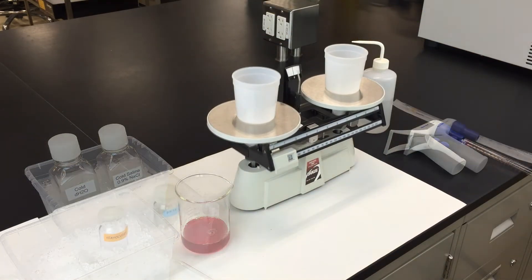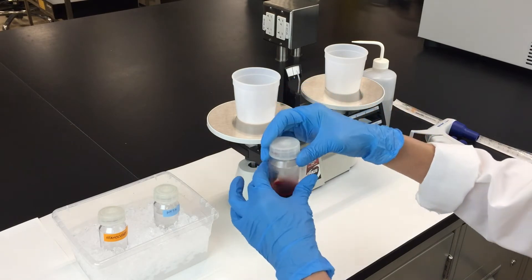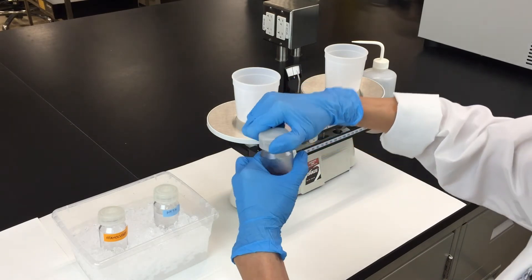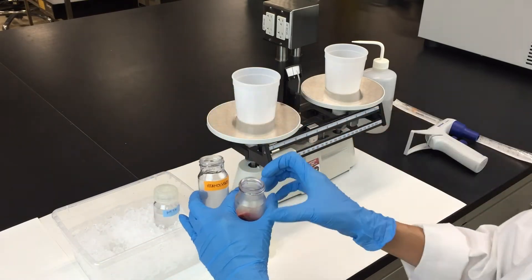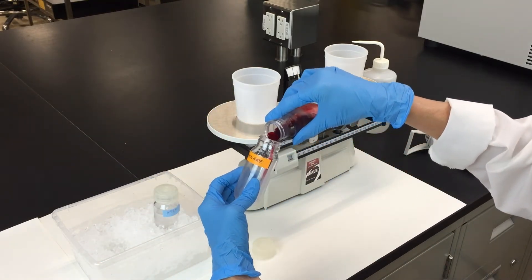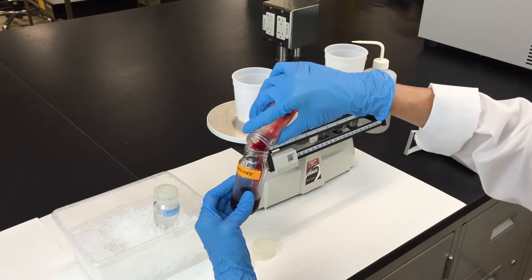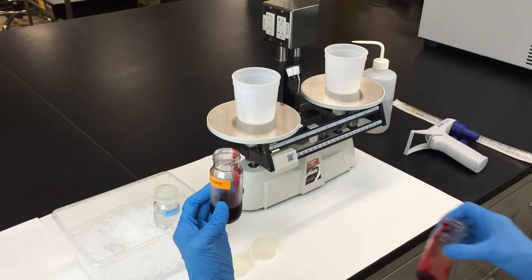After the third spin, pour the liquid layer into a tube labeled hemolysate and discard the pellet. The liquid layer now contains the hemoglobin and the pellet contains the cell debris from the broken red blood cells.